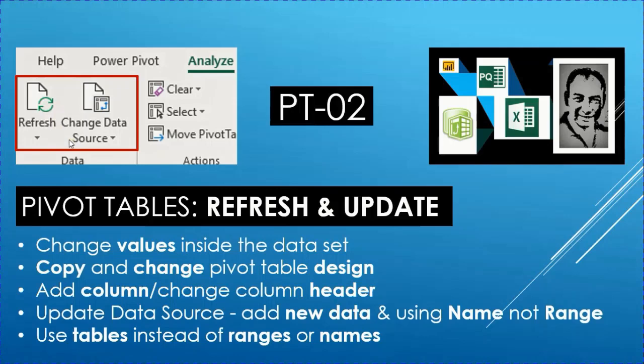Five topics will be discussed. First, how we can change values inside the data set. Second, how we can copy and change the design of the pivot table. Third, we'll look at how we can add a column or change the column header for the original data set of the pivot table. Fourth, how we can add new data using names instead of ranges. And finally, how we can use Excel tables functionality with pivot tables.